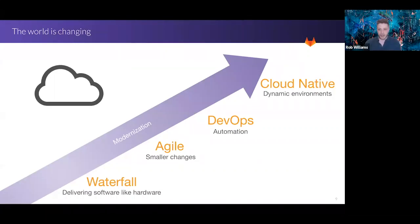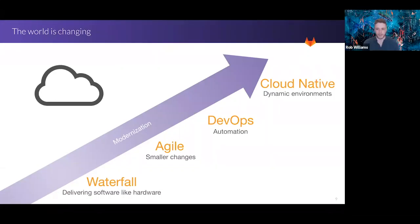After agile, development went fast but ops couldn't keep up. Bringing ops into the process and breaking down silos through automation and collaboration gave us a great step forward with more stable, faster, and accelerated build times. Now we're seeing containerization, microservices, Kubernetes, and cloud native — adding complexity but also enabling iteration at a speed and scale previously impossible for most companies.